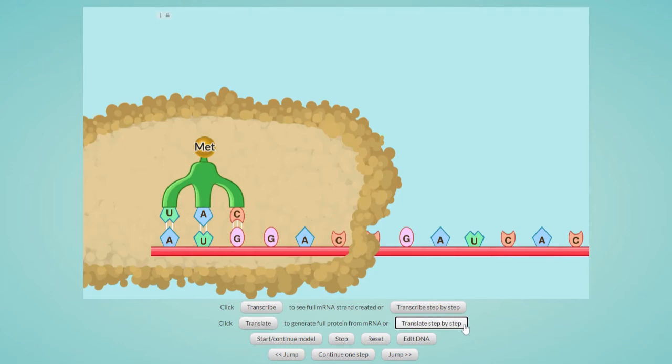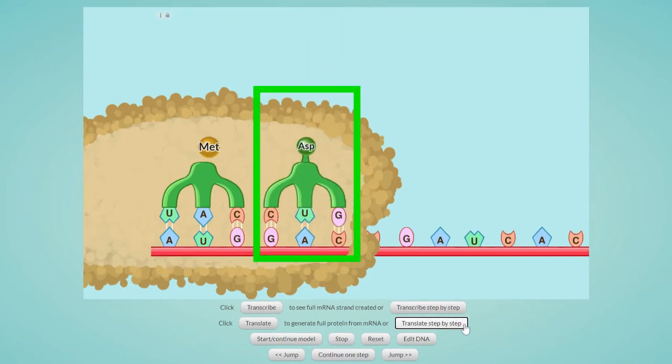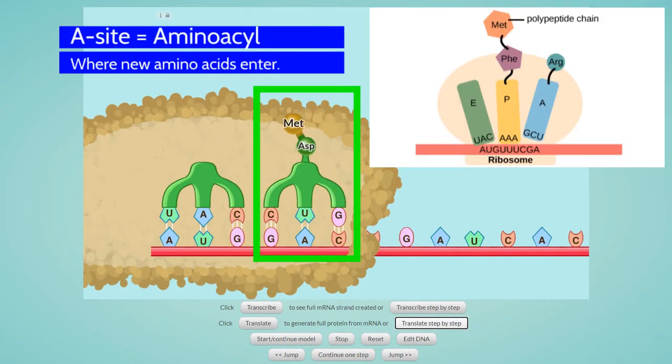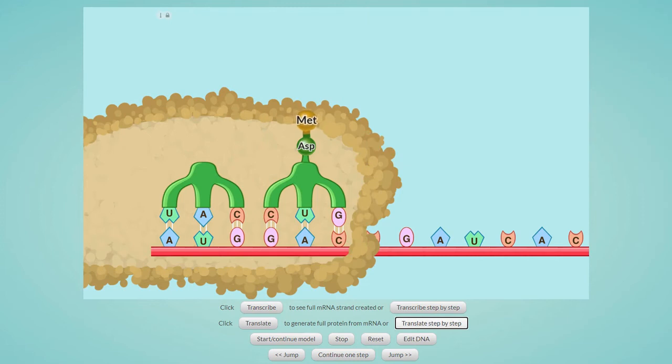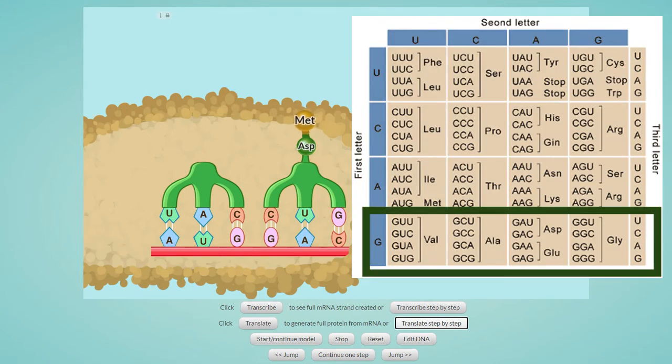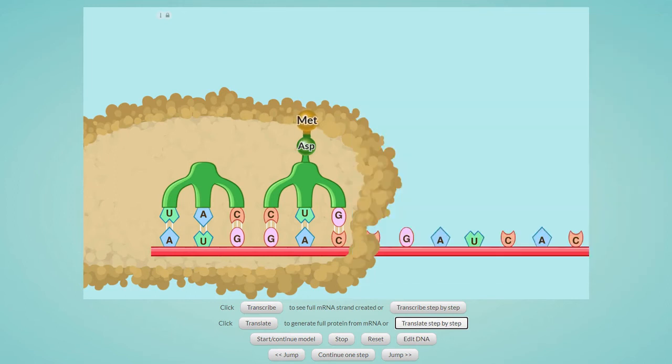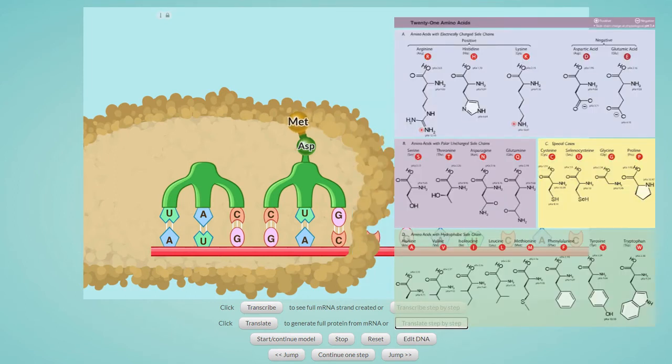Clicking the translate step-by-step button will bring in the next tRNA to what is called the aminoacyl site or the A site. This is where the incoming tRNA will match up with the codon. We can see that the second tRNA brought an amino acid abbreviated ASP, which is short for aspartic acid. There are 20 standard amino acids which are used to build proteins and two additional amino acids which are found in some prokaryotic cells. Essential amino acids are those which cannot be synthesized by human metabolism and must be supplied by your diet.